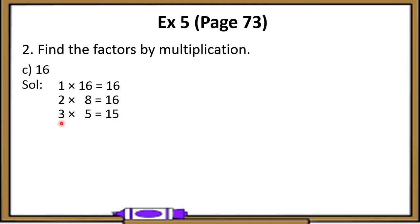That means 3 is not a factor. Also, if you divide by 5, you will again get remainder 1 and quotient 3. That means it is vice versa, so you may say that 3 and 5 both are not factors of 16.